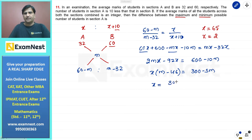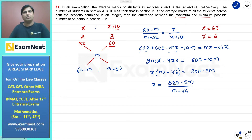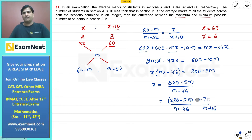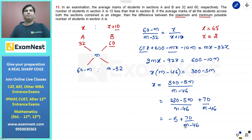इस step के बाद, numerator को break करते हैं so that एक बड़ा part denominator को completely divide करे। यहाँ 5m है, तो 5 से multiply करने पर 5m-230 मिलता है। इसे 230-5m+70 लिख सकते हैं। पूरा expression (m-46) से divide करने पर: x = -5 + 70/(m-46)। अब m की वो values चाहिए जिससे (m-46), 70 का factor हो।